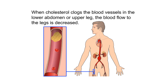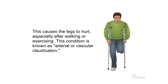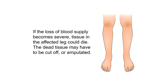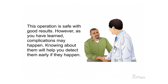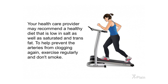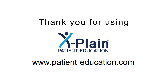Summary. When cholesterol clogs the blood vessels in the lower abdomen or upper leg, blood flow to the legs is decreased, causing the legs to hurt especially after walking or exercising — a condition known as arterial or vascular claudication. If the loss of blood supply becomes severe, tissue in the affected leg could die and may have to be amputated. Bypassing the clogged arteries using a graft is very helpful in reducing pain and preventing amputation. This operation is safe with good results, though complications may happen; knowing about them helps you detect them early. After surgery, maintain a healthy diet low in salt, saturated fat, and trans fat, exercise regularly, and do not smoke.